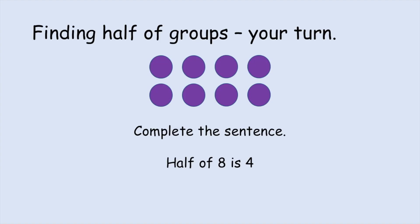Now the answers are: half of eight is four. So I have one group over here. One, two, three, four, and another group over here. One, two, three, four. Half of eight is four. Well done if you got that correct.